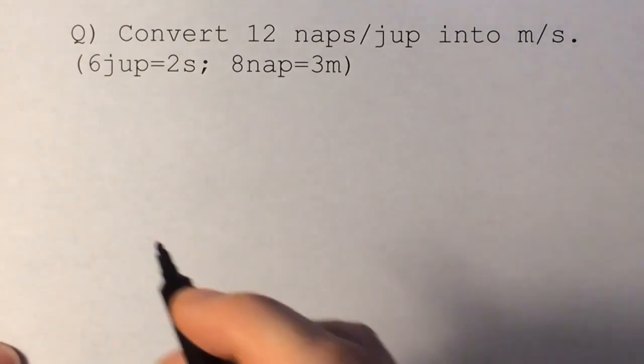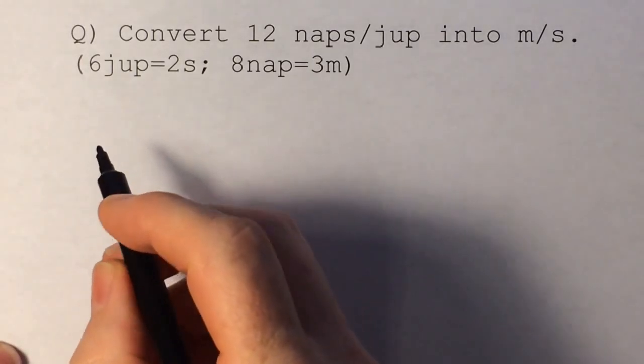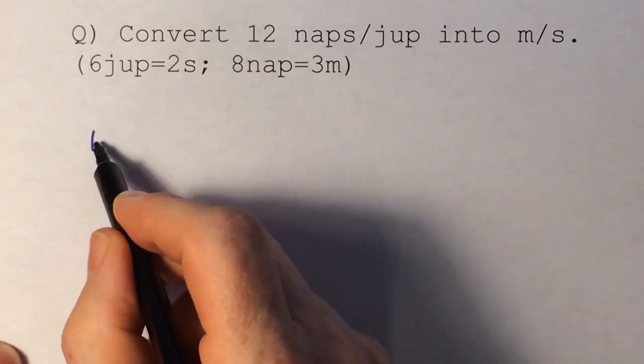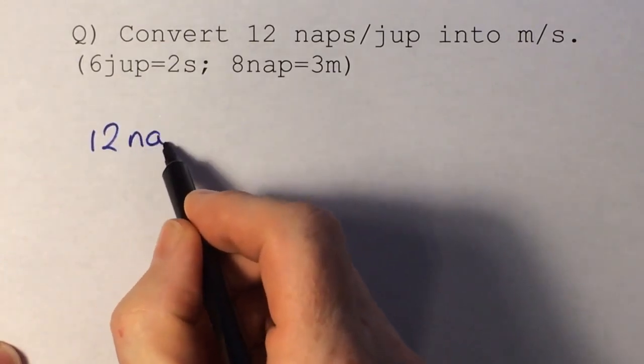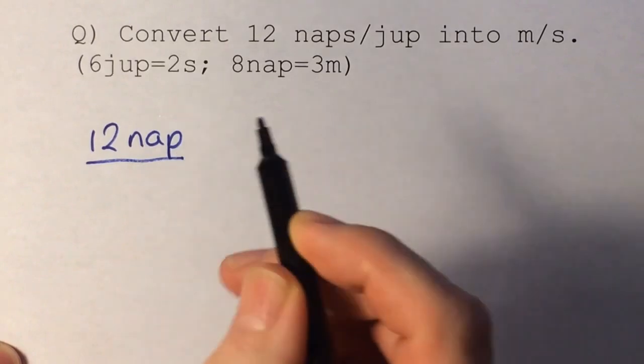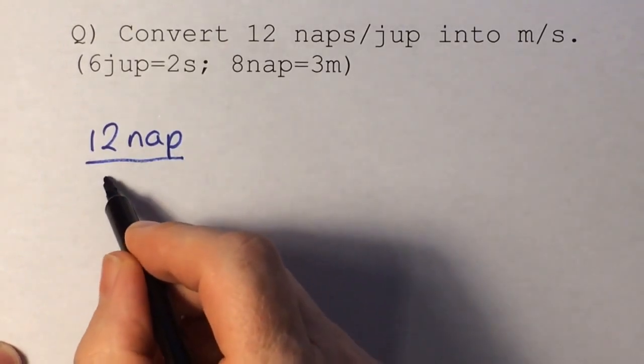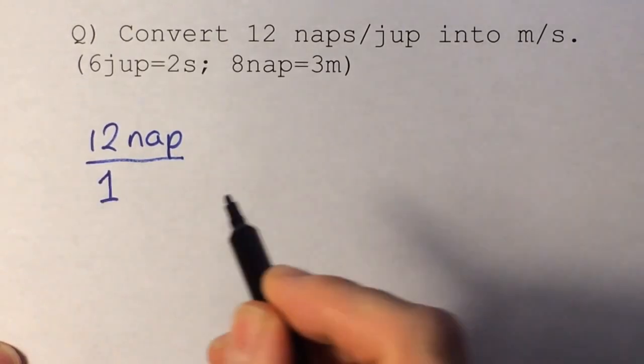So we're going to use the factor label technique, and the first thing we're going to do is write down what we originally had, which is 12 naps over, when it says per jop, it means over 1 jop.